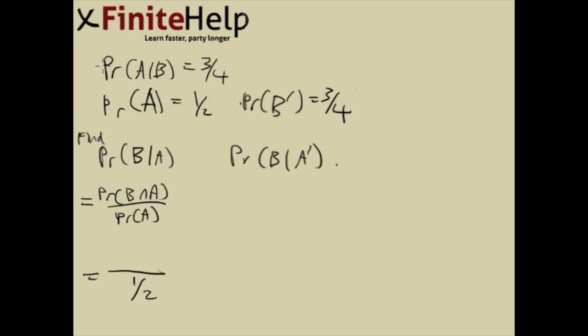Well, one thing that's going to be helpful when you see this, probability of A given B equals three-fourths, is to change that into probability of A intersect B over probability of B. That's what A given B is. So we know that's three-fourths.